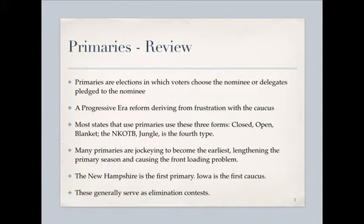Many primaries have a problem we've seen from lecture one: they are jockeying to become the earliest, which unfortunately is lengthening the primary season and causing the front-loading problem. It's causing a mashup at the front of the line. We know that New Hampshire is the first primary and Iowa is the first caucus, and then there's a rush right after that.